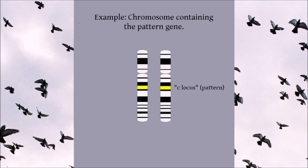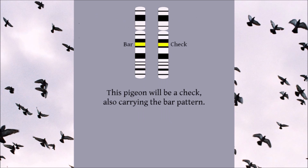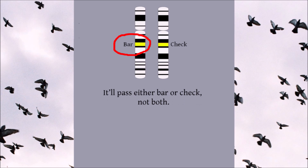For visual learners, imagine two chromosomes as a pigeon's two copies of the chromosome that carries the pattern. Imagine the gene marked in yellow is the pattern locus — on the left, the bar gene, and on the right, a check gene. So this bird carries bar and check. What pattern will it be? That's right, it'll be a check, because check is dominant over bar. But in the next generation, this bird simply has a 50% chance of passing on either of its pattern genes — bar or check, not both.